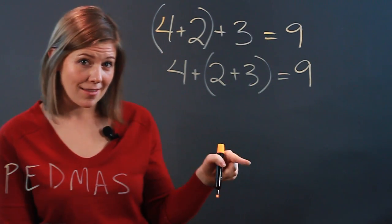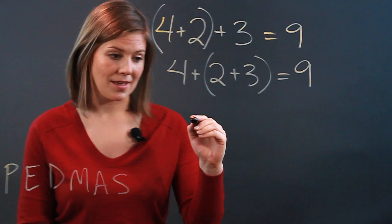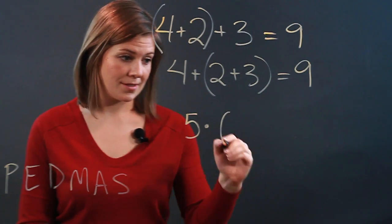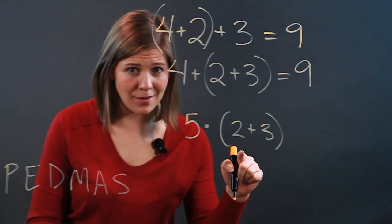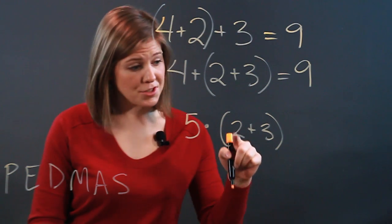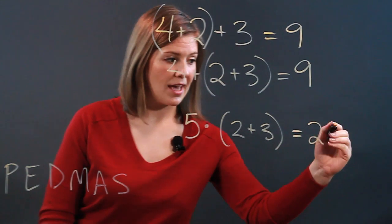This gets tricky, though, if we have any multiplication happening outside of it. So if you were to have something like 5 times 2 plus 3, you need to do the addition first. So 2 plus 3, that gives us 5. Multiply that by 5, we get 25.